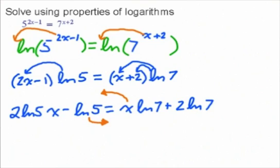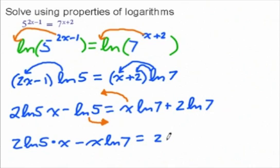So when I rewrite this expression, I'm going to have 2 ln of 5 times x minus x ln of 7 is equal to 2 ln of 7 plus ln of 5.